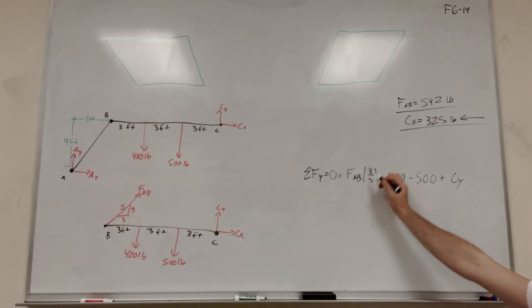So then of course you do the math on this, plug in force AB, and you're going to get that C_Y is equal to 467 pounds, and it's a positive number, so that means it's pointing upward.